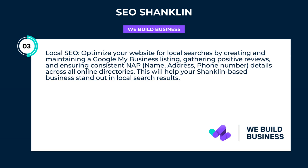Local SEO. Optimize your website for local searches by creating and maintaining a Google My Business listing, gathering positive reviews, and ensuring consistent NAP — name, address, phone number — details across all online directories. This will help your Shanklin-based business stand out in local search results.